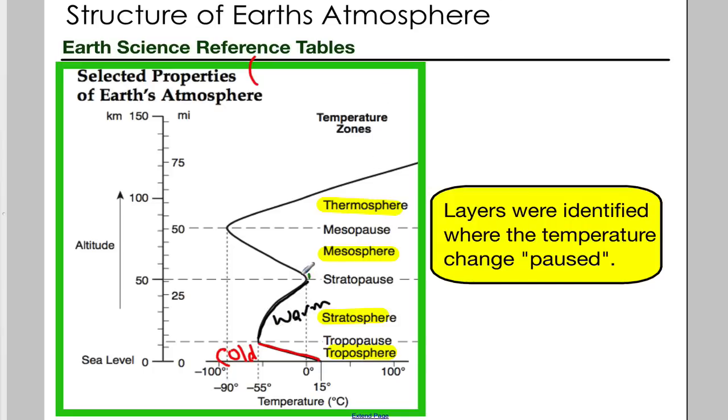Traveling back now through the mesosphere, this area here, the temperature drops from zero down to the coldest part of the atmosphere at negative 90. So this area here is colder as you get higher.